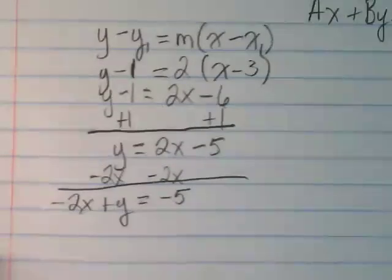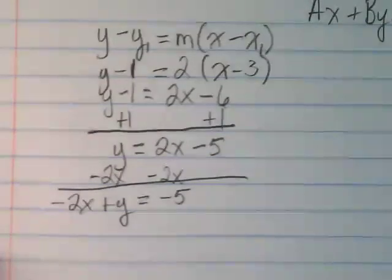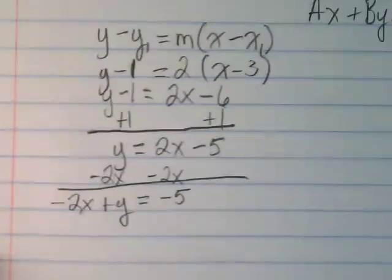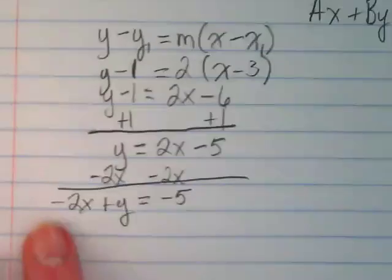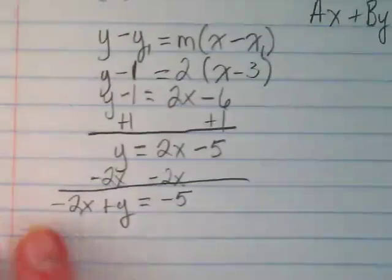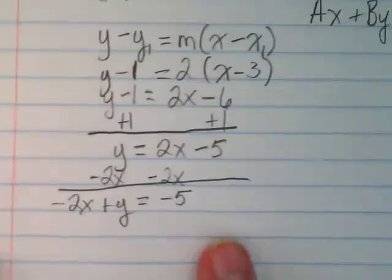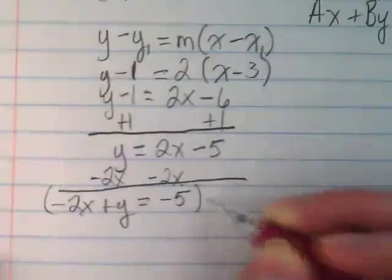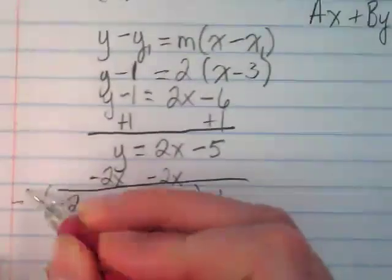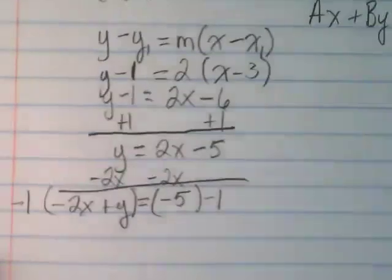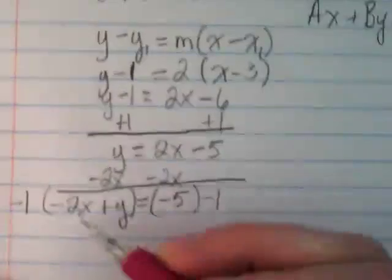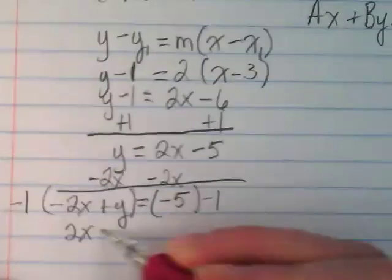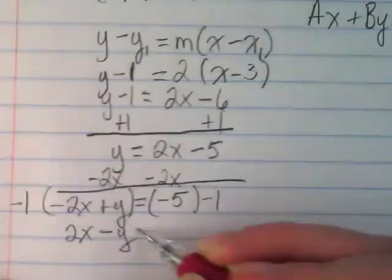It's almost there. Do you remember the hint I gave you that we wrote in our notes yesterday? What has to always be positive in this? The number that's in the place of the a. And right now we've got a negative 2 there. So I can multiply or divide this whole thing by negative 1. I'm going to multiply it by negative 1. And that's going to change everything's positive or negative to the opposite. So I end up with 2x minus y equals 5.